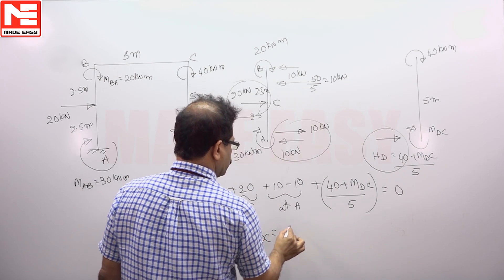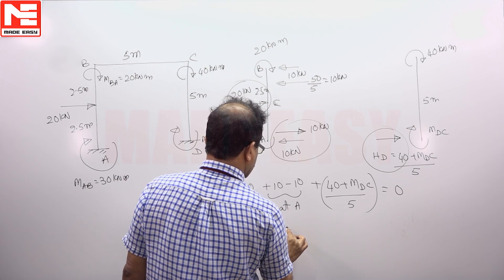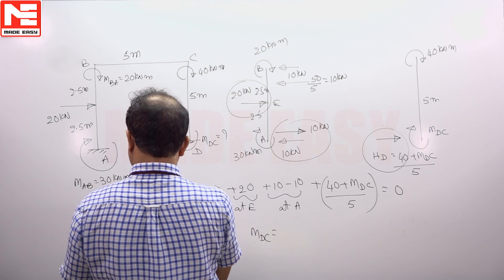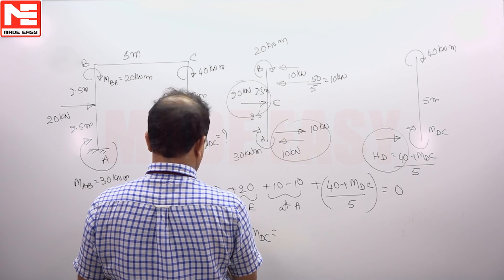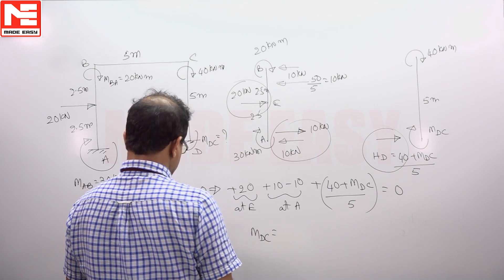So M_DC you will get minus 20, 100 by 40, 2.5. M_DC plus 40 by 5 is equal to 0.